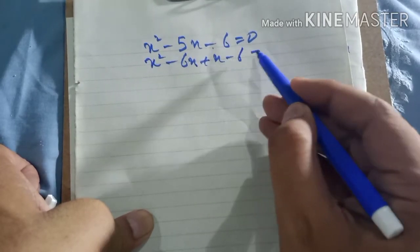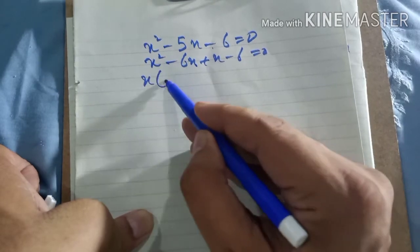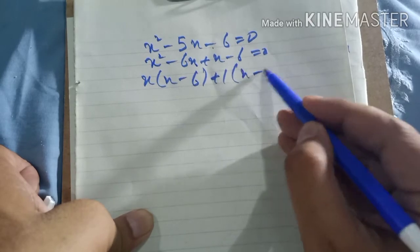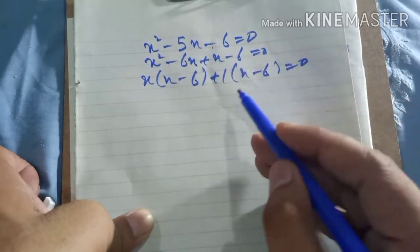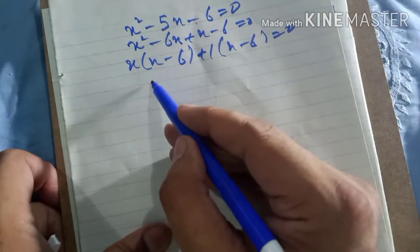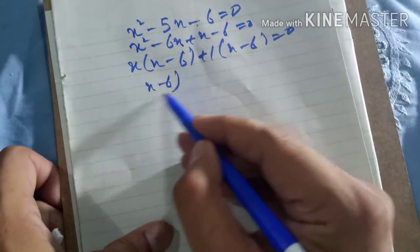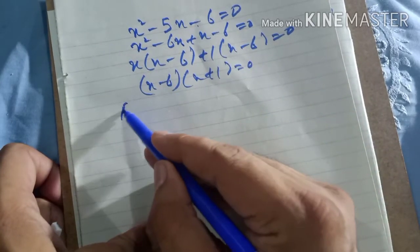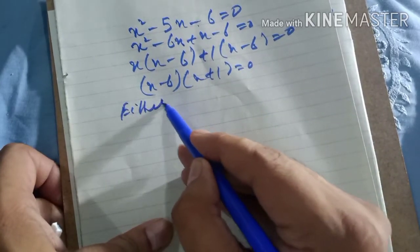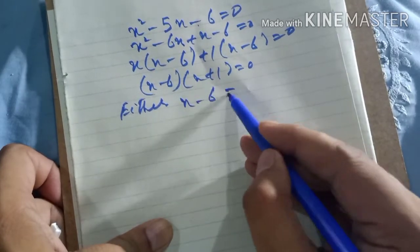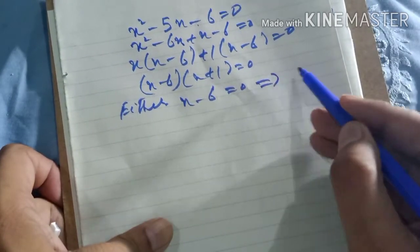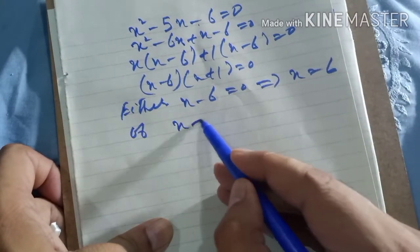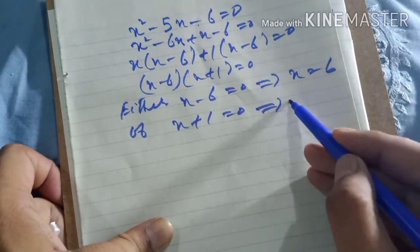Factoring x² − 5x + 6 = 0: (x − 6)(x + 1) = 0. Either x − 6 = 0, which gives x = 6, or x + 1 = 0, which gives x = −1. These are the two solutions.